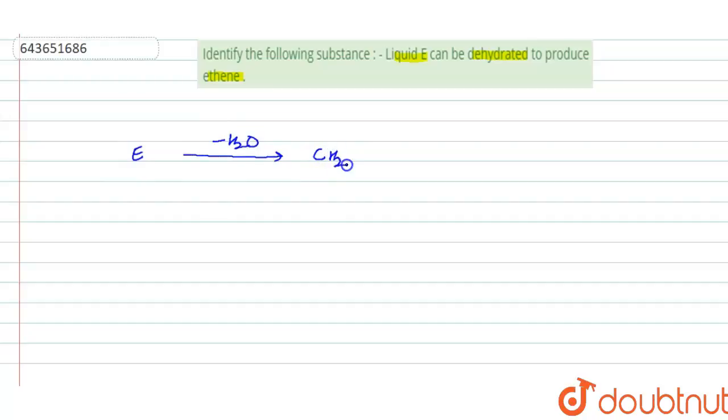We will be left with ethene, which is CH2 double bond CH2. And dehydration means removal of water molecules.